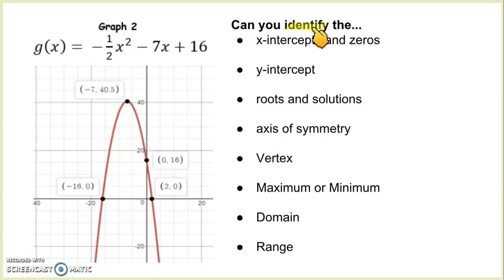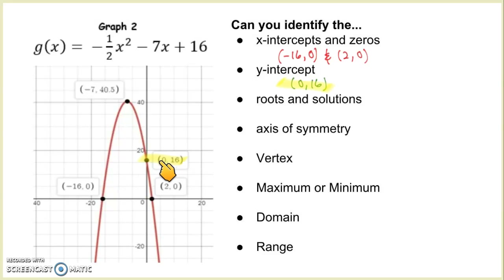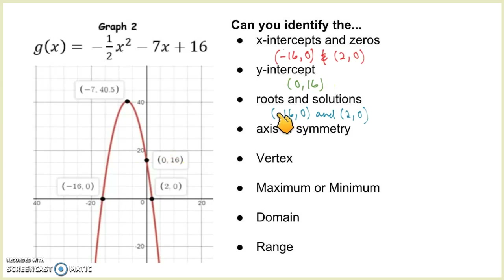Let's see if you can identify the key features on the second graph. My x-intercepts and zeros — if you said negative 16, 0 and 2, 0, you'd be correct. Those two values are here and here on the graph. The y-intercept is 0, 16, where the graph crosses the y-axis. The roots and solutions are the same as the x-intercepts and zeros: negative 16, 0 and 2, 0.